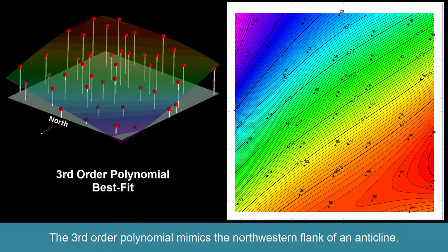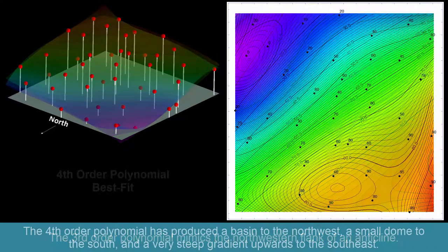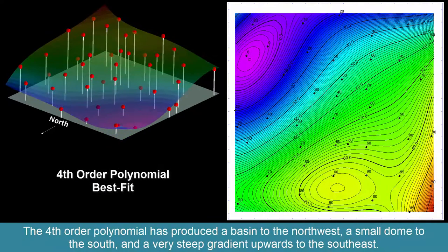The third-order polynomial mimics the northwestern flank of an anticline. The fourth-order polynomial has produced a basin to the northwest, a dome to the south, and a very steep gradient upwards to the southwest. The fifth-order polynomial has produced some nonsensical flexures at every corner of the model.